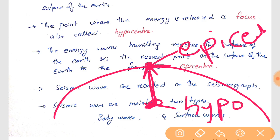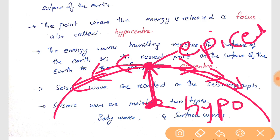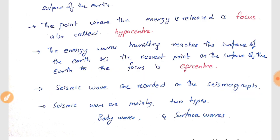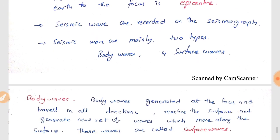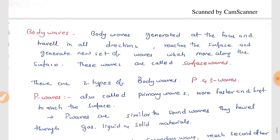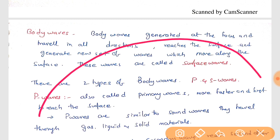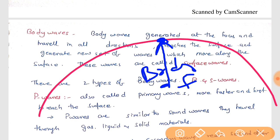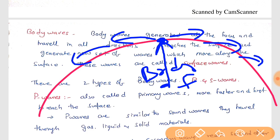The waves generated from the focus are called body waves. After body waves touch the surface of the earth, another set of waves is generated which flow along the surface — these are called surface waves. Seismic waves are mainly two types: body waves and surface waves.